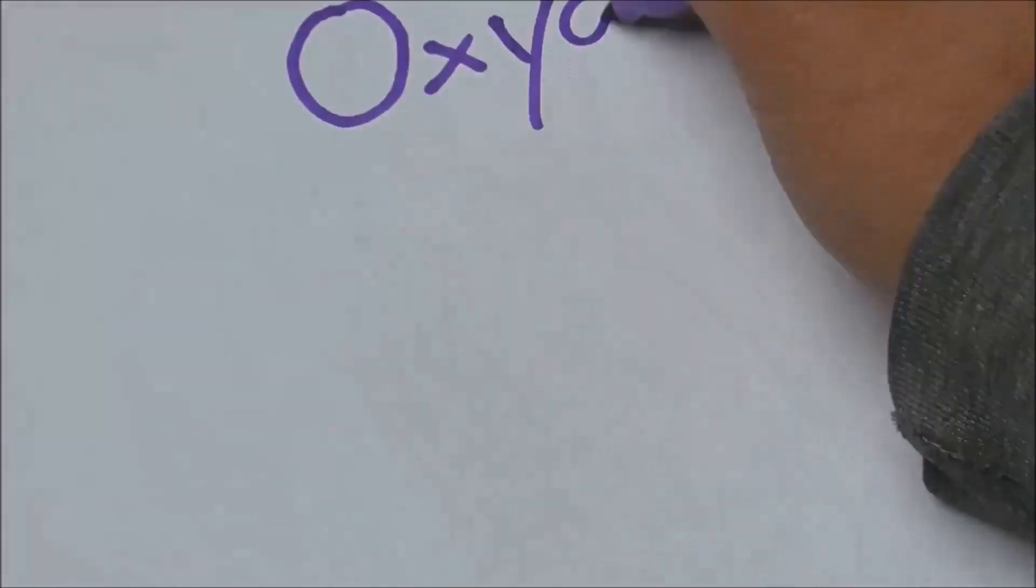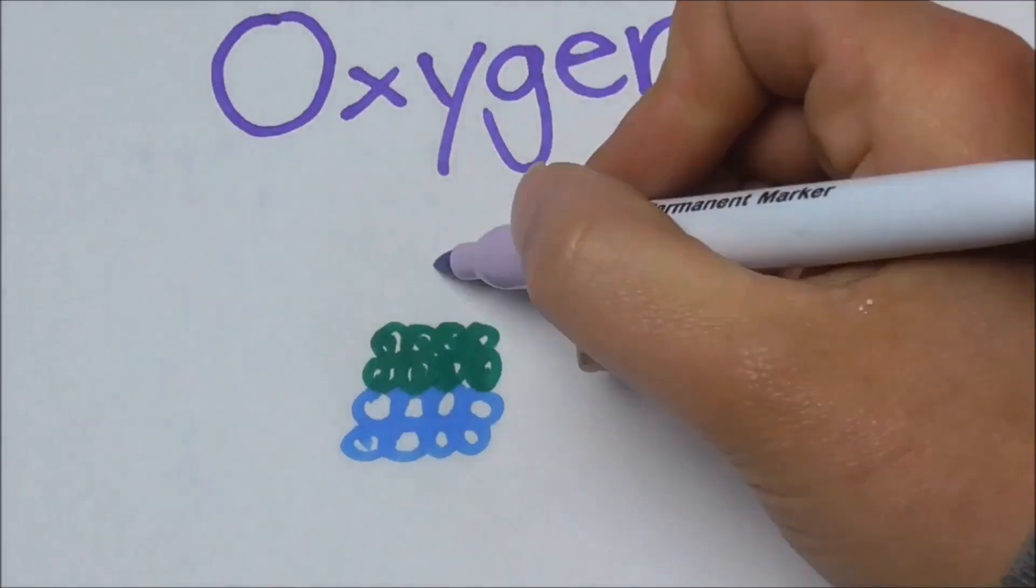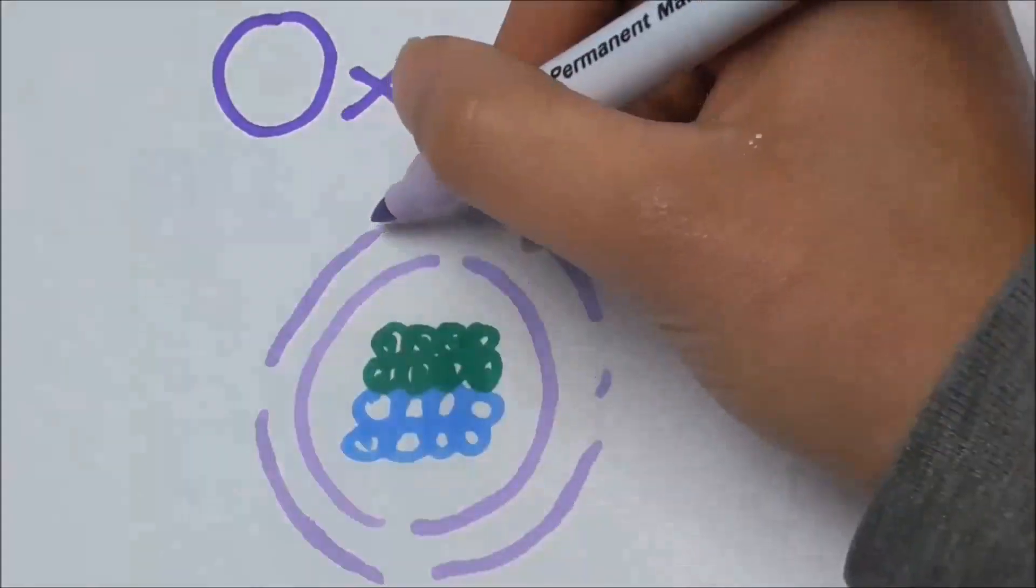Last one, oxygen. Eight protons, eight neutrons, and it's got eight electrons. So that's two in the first one, and six in the outer one.